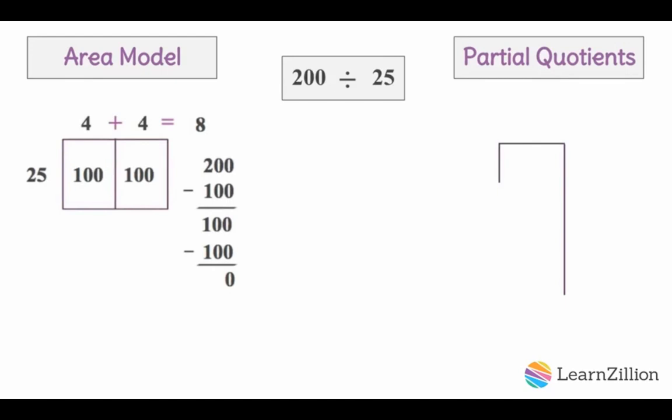We're going to start our partial quotients the same way we would an area model, with our dividend. In this case, the 200 total bottles that are being split up is our dividend. Next, we use our divisor, which is 25, or the number in each group.